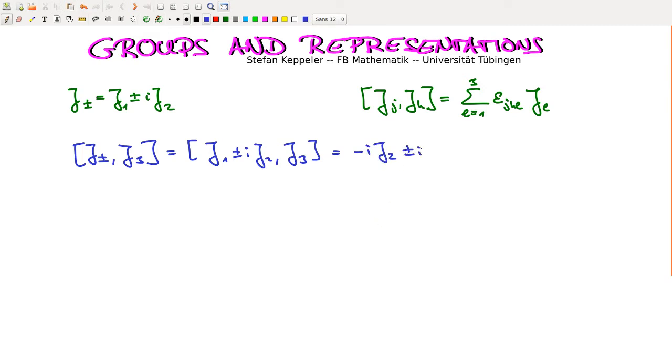And then we have plus minus i, commutator of J2 with J3, and that's i times J1. So we have here an i times i, so we have minus i J2, and that's minus plus J1, which we can write as minus plus J1. And now what do we need here? It's a minus plus i J2.